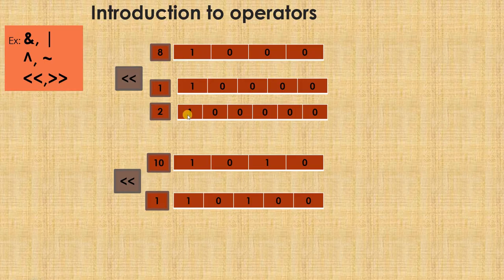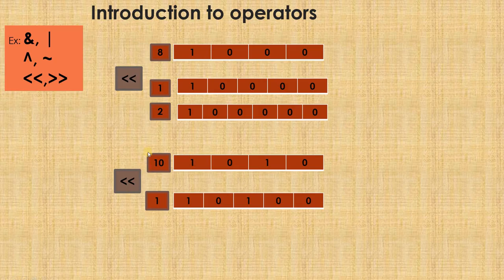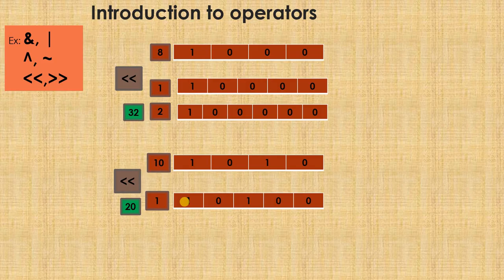Once I shift once again to the left, the 1 gets shifted further left followed by all 0s. One more example: 10 — the representation is 1 0 1 0. Once I left shift it, this 1 will go out to the next bit, this 0 will come here, this 1 will come here, this 0 will come here, and a new 0 is added. So it becomes 1 0 1 0 0, which is the value 20.